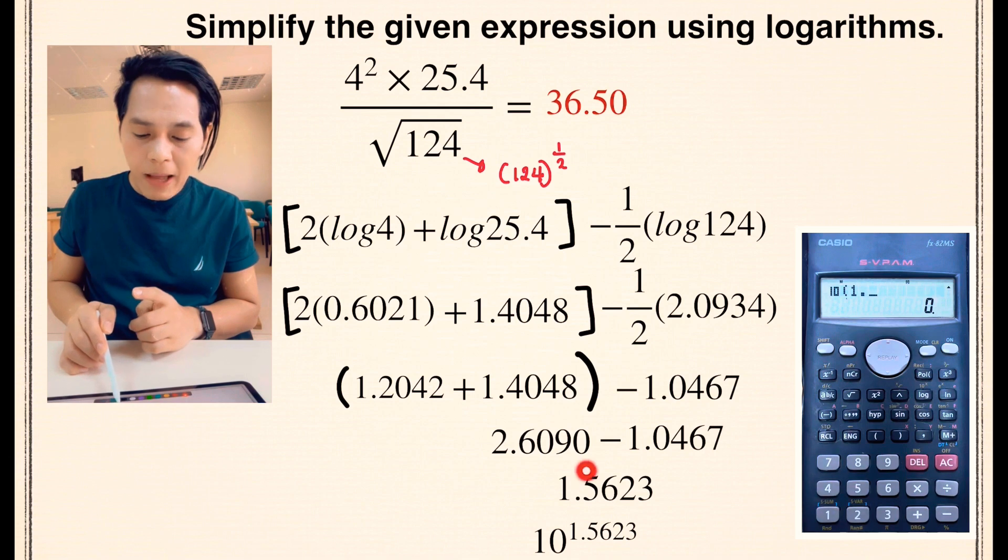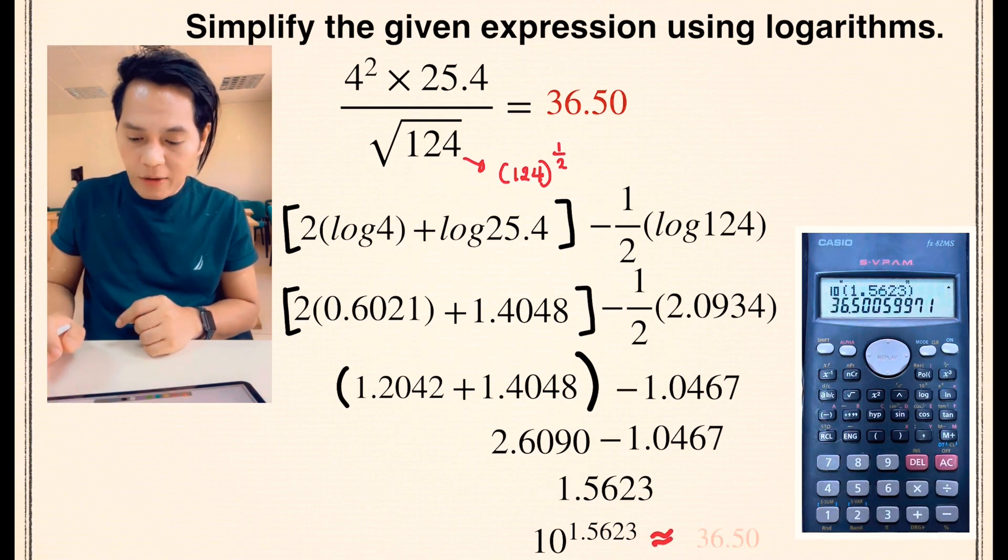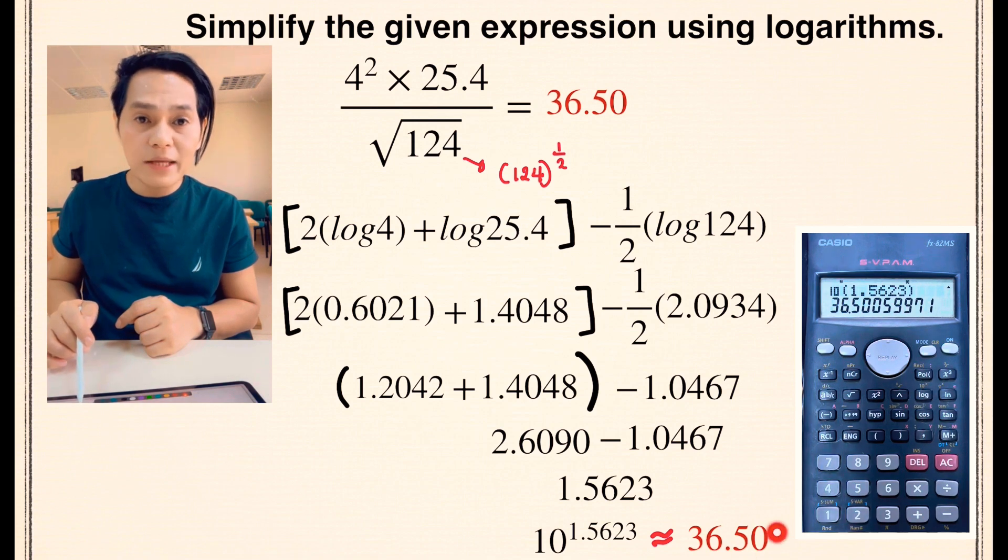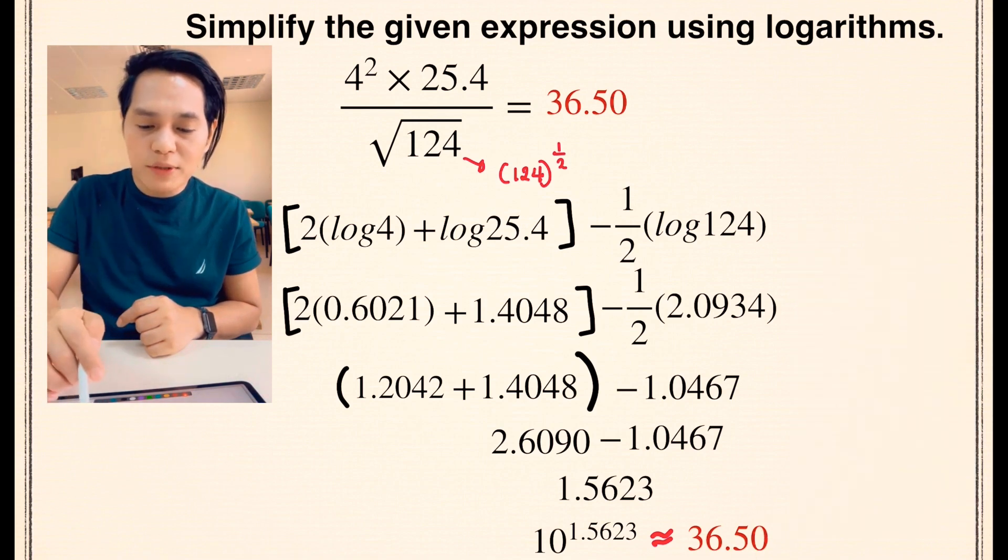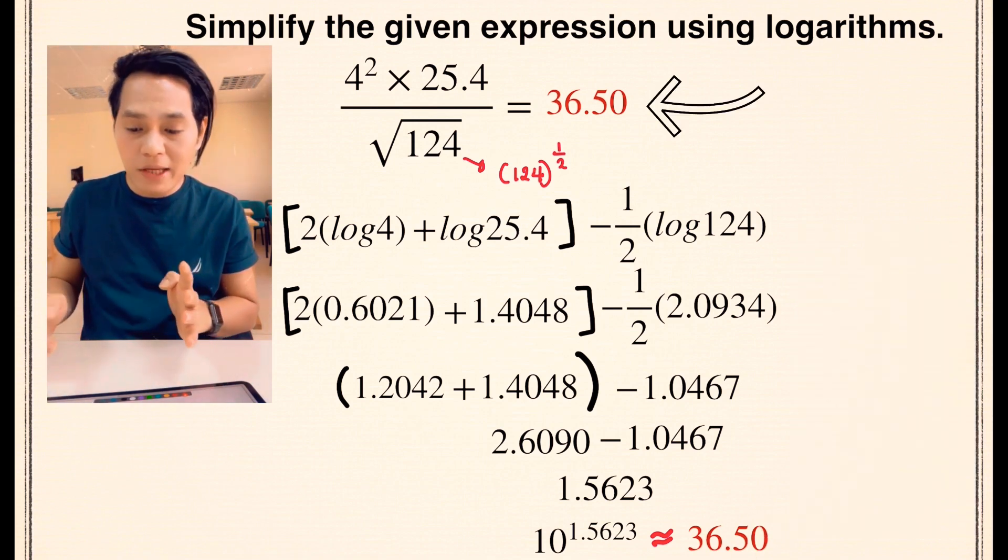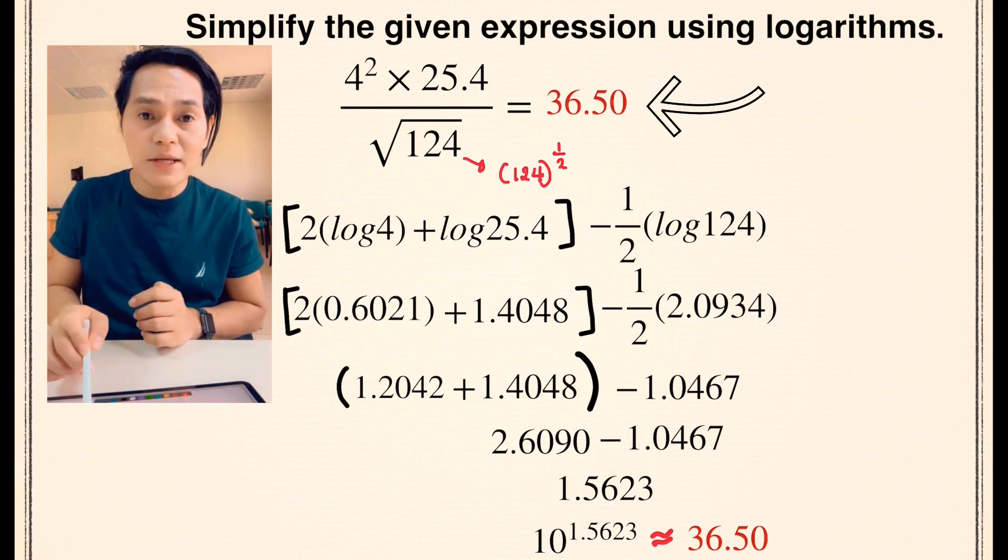So we are getting now the anti-log. So 10 to the power of 1.5623. We approximate the value into two decimal places now. So it's 36.5. And that is equal to the value above which is 36.5.